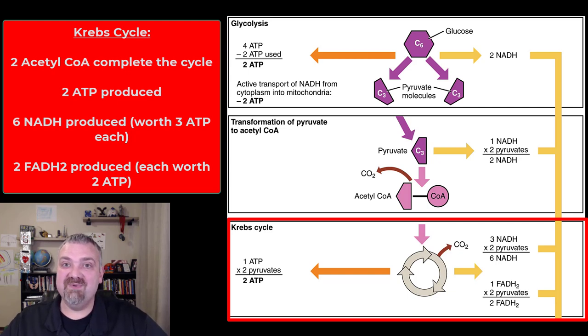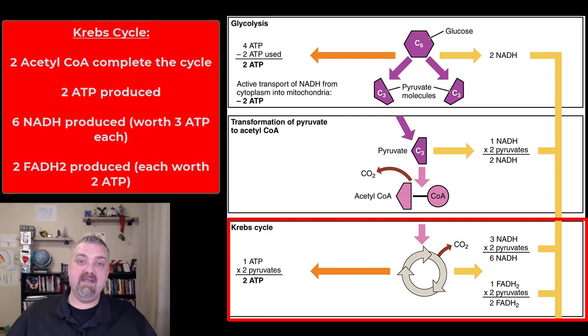But we're now going to generate six more NADHs and two FADH2. So NADH is the electron carrier made from niacin and each one of those is worth three ATP. FADH2 is the electron carrier made from riboflavin and each is only worth two. So let's do our running totals now and see where we're at.